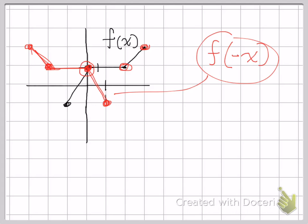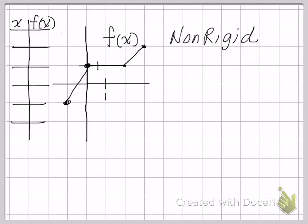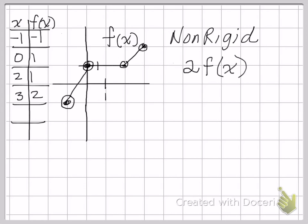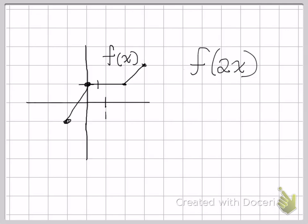Finally, we're going to look at what's called a non-rigid transformation. Something that might help us are the actual points. If I take the points that were given and fill out a table of values: the point in the lower left is negative one, negative one; the point on the y-axis is zero, one; this point is two, one; and this point is three, two. In a non-rigid transformation, I'm going to be asked for some multiple of f of x, or some multiple of x.